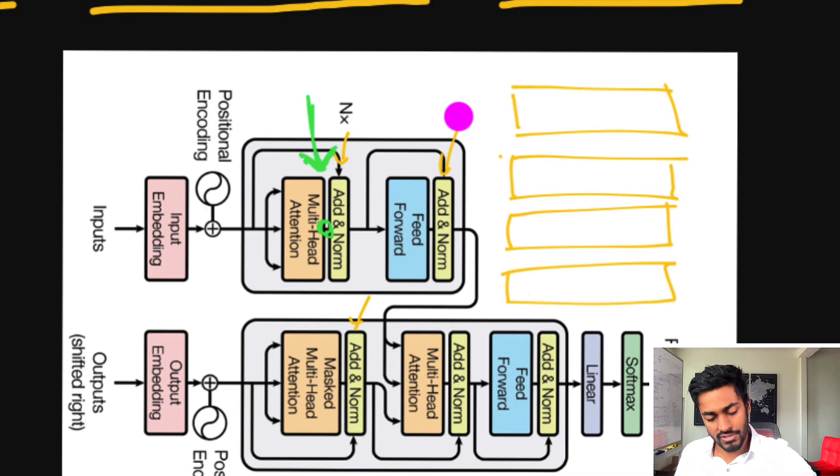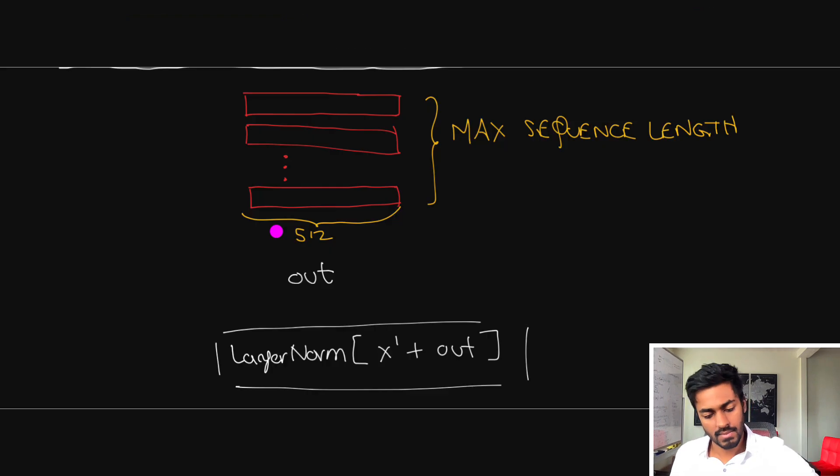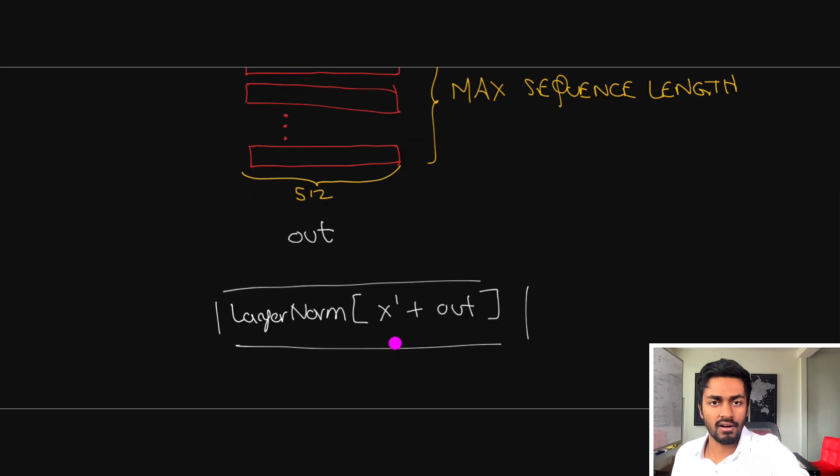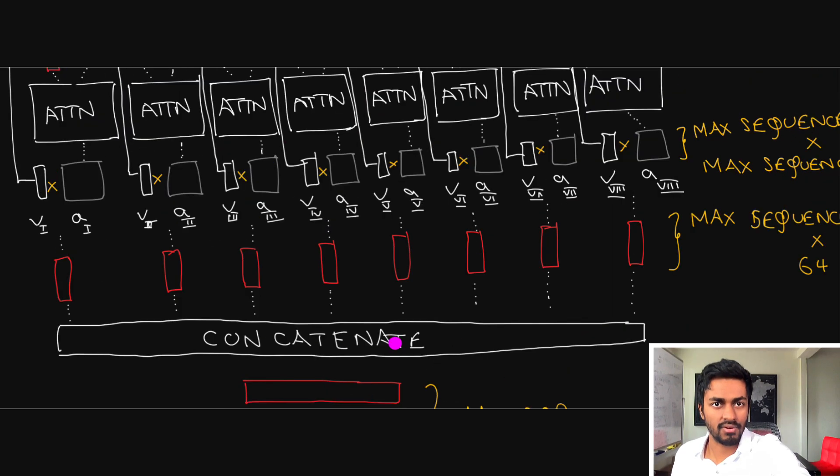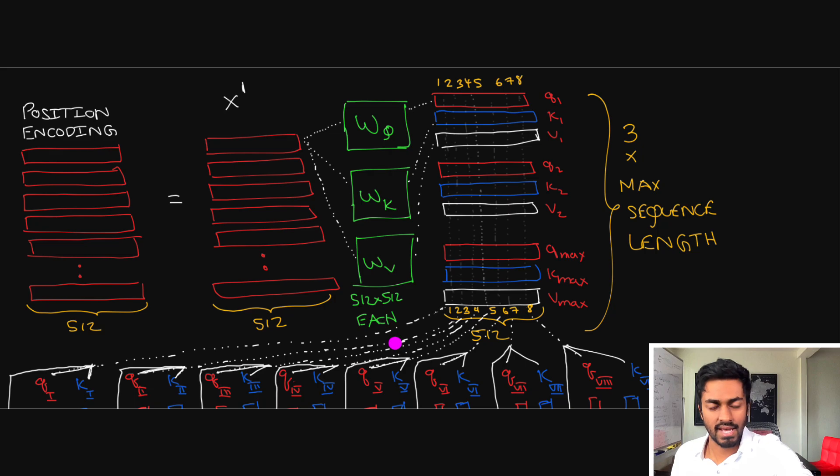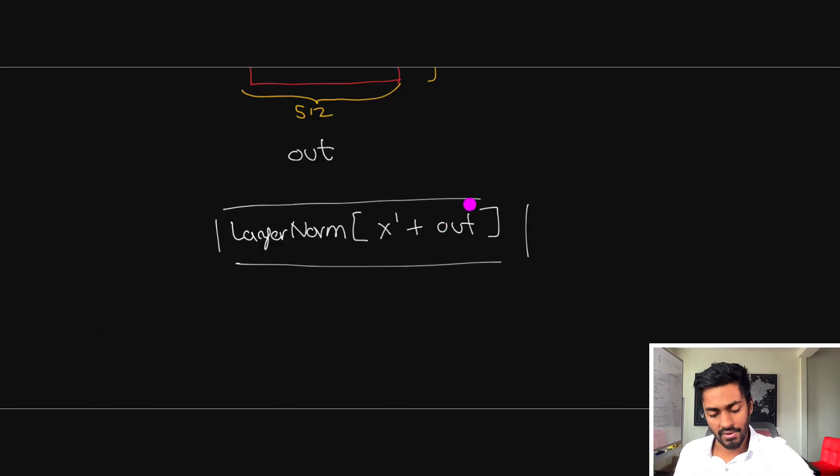So to prevent that we kind of induce more stronger signals from the input in different parts of the network. And so coming back to our figure you'll see that we will add this out matrix along with x dash and if you recall this x dash is exactly what we saw before where it is the output of adding the input with your positional encoding that is this matrix. And hence you can see that we are adding two matrices and then normalizing. Add and norm.